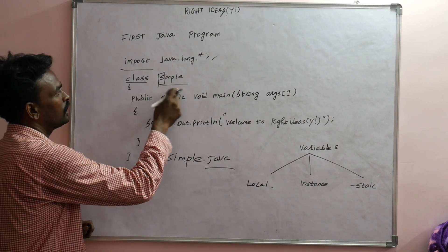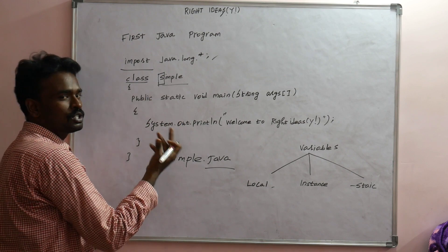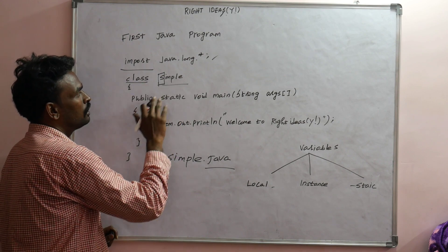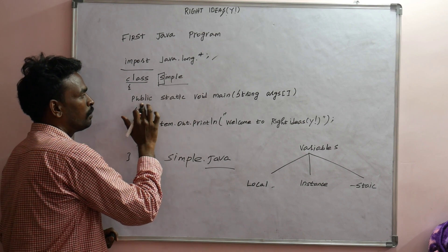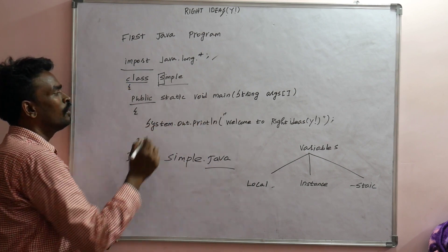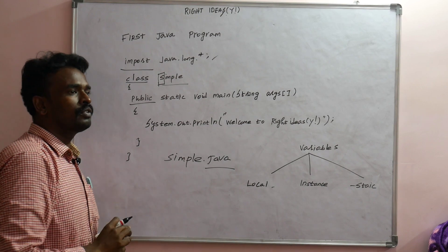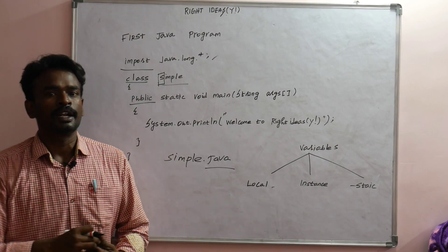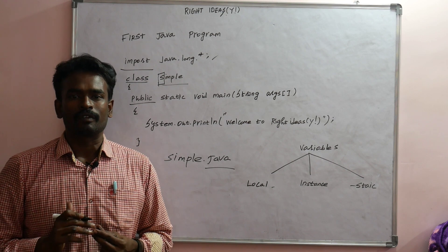The keyword 'class' is used to define a class, and a class is a collection of objects. The next element is the user-defined program name. Then we have 'public static void main'. 'Public' is an access specifier, also called an access modifier. C++ is a procedural-oriented language, while Java is an object-oriented language.